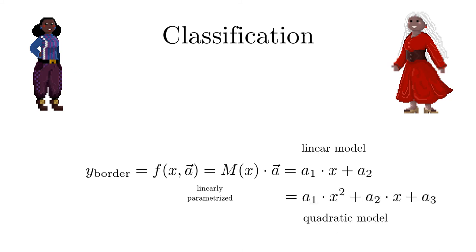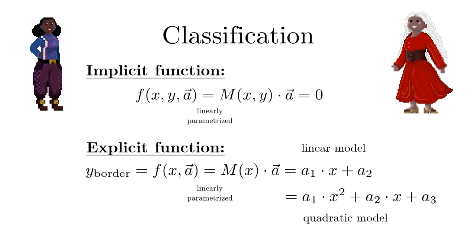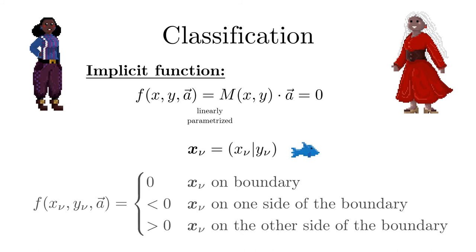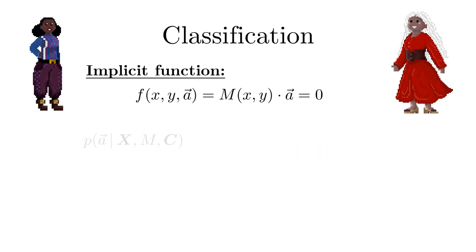We can also construct an implicit function. When we insert the position x sub-nu, y sub-nu of the fish, the implicit function yields 0 if the fish resides exactly on the boundary. Otherwise, the sign of the function tells us on which side of the boundary the fish is located.